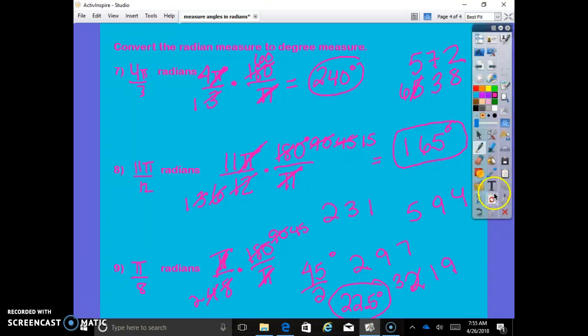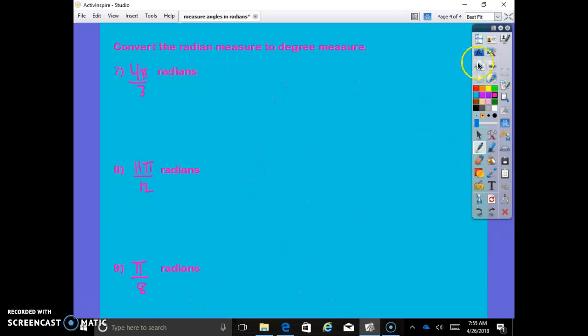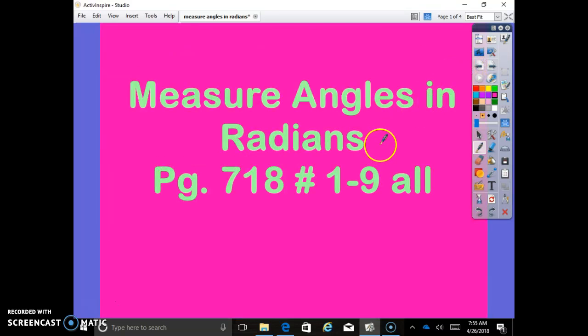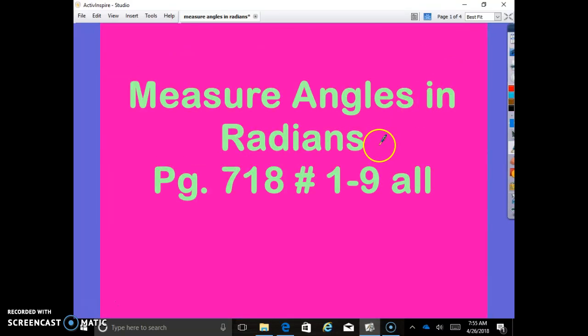That is everything that I wanted to go over with you guys today on measuring angles in radians. Going into radians from degrees, going from degrees into radians. Remember, if you're turning into radians, it's times pi over 180. If you're turning into degrees, it's times 180 over pi. And to find arc lengths, you can always use a proportion, which is the easiest way and the best way, because you don't have to memorize the extra formula. I hope you enjoyed this lesson. Have a great day.